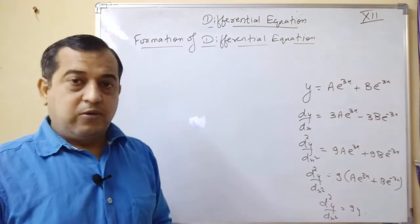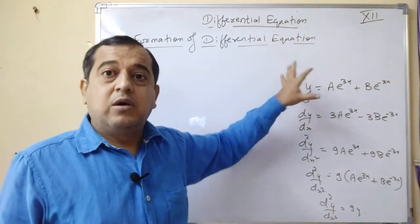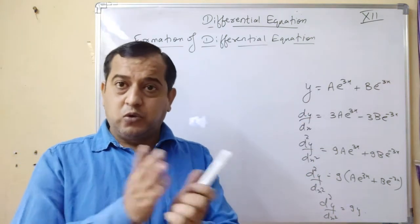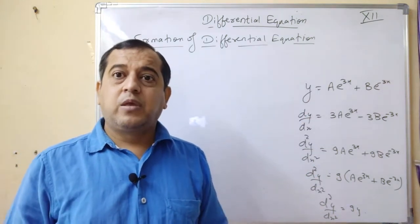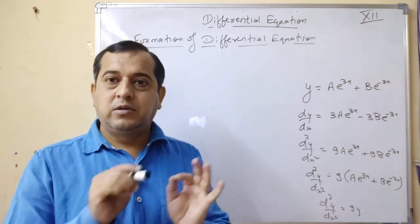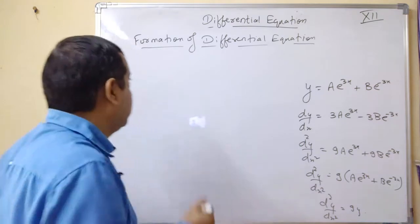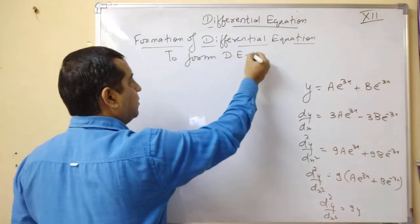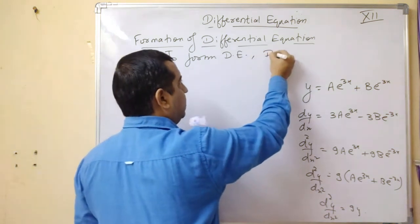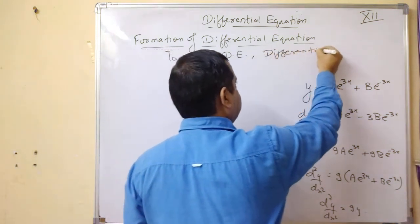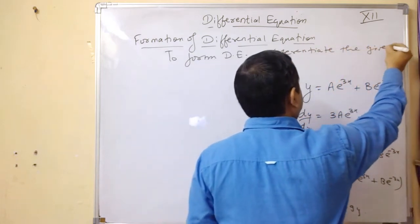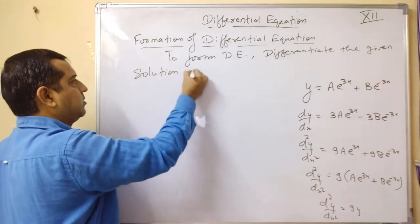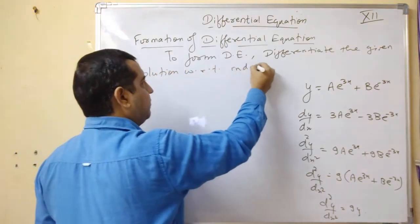So what you have seen? We have seen that a general solution is given to us, and when we differentiate it, we get the differential equation. So to form the differential equation, you have to differentiate the general solution — or solution, or particular solution. To form the differential equation, differentiate the given solution with respect to the independent variable.